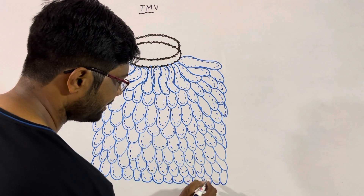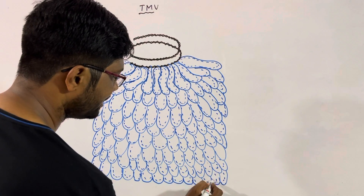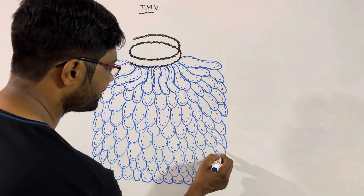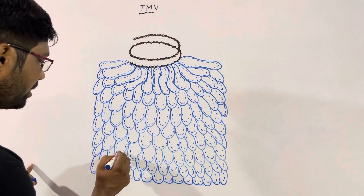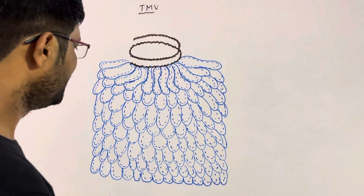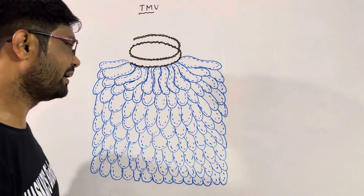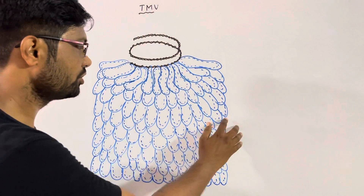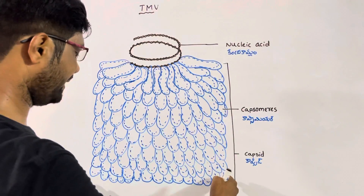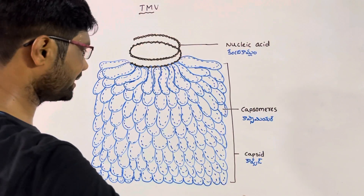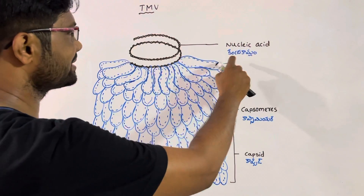If you want to make it easy, you can do it. For labeling, you can use your scale or ruler. You can choose your stride and do the labeling. So you can label our nucleic acid or RNA.